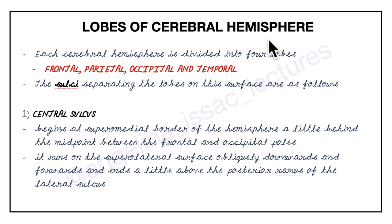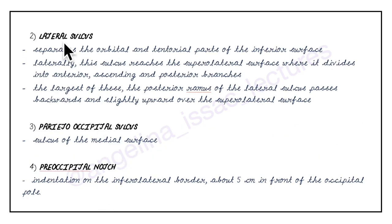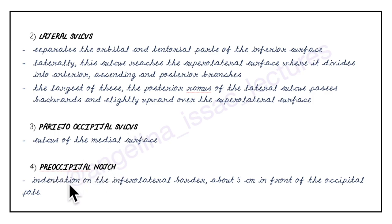To summarize: each cerebral hemisphere is divided into four lobes — frontal, parietal, occipital and temporal. The central sulcus begins at the supramedial border, a little behind the midpoint between the frontal and occipital poles, runs obliquely downwards and forwards, ending above the posterior ramus of the lateral sulcus. The lateral sulcus divides on the supralateral surface into anterior, ascending and posterior branches. Then we have the parieto-occipital sulcus and the pre-occipital notch — an indentation on the infralateral border about 5 cm in front of the occipital pole.